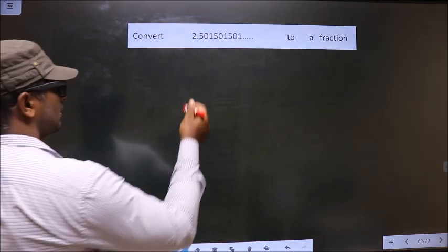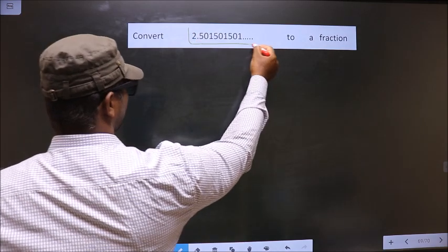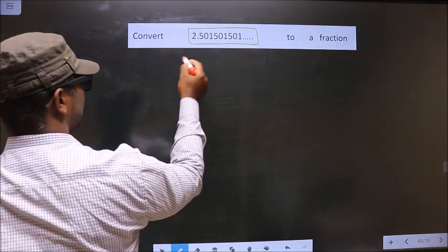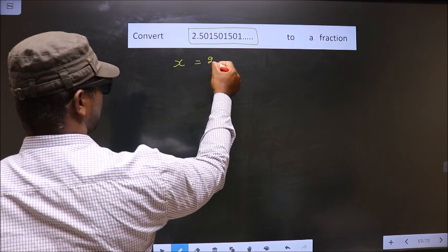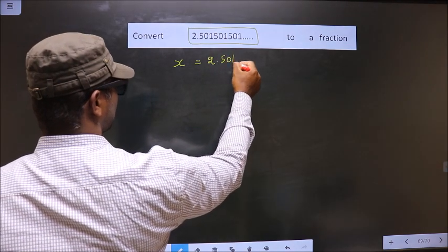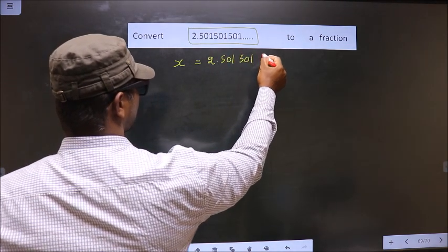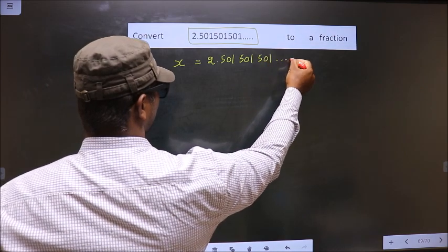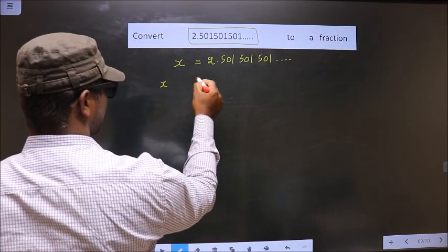First, whatever we have to convert, you take that to be x. So x equals 2.501, 501, 501 and so on. That is x.